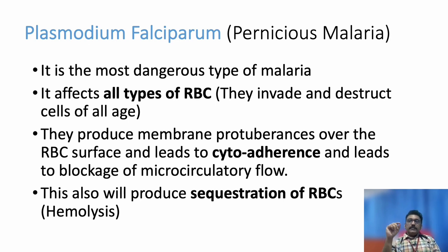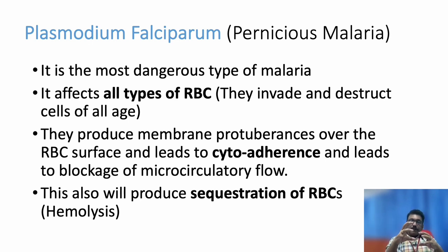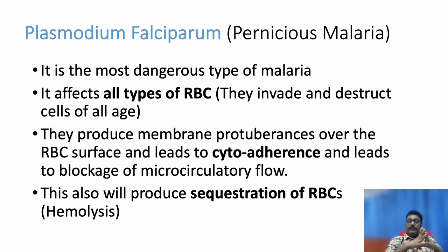The second problem in falciparum malaria is that infected RBCs adhere together — this is called cytoadherence — and they produce clumps. These clumps of RBCs can block microcirculation. This is the second important problem in falciparum malaria, and all organs will suffer because of this microadherence and microthrombi in the small blood vessels, causing ischemic phenomena in almost all organs.